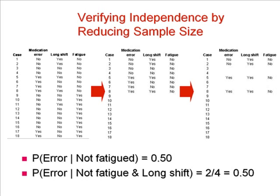Knowing the length of the shift tells us something about the probability of error in that shift. But consider the situation where we were examining these two events among cases where the provider was fatigued. Now the population of cases we are examining is reduced to cases 1 through 8, shown in the central table. With this population, the situation is different and the medication error is independent from length of shift when the nurse is already fatigued.